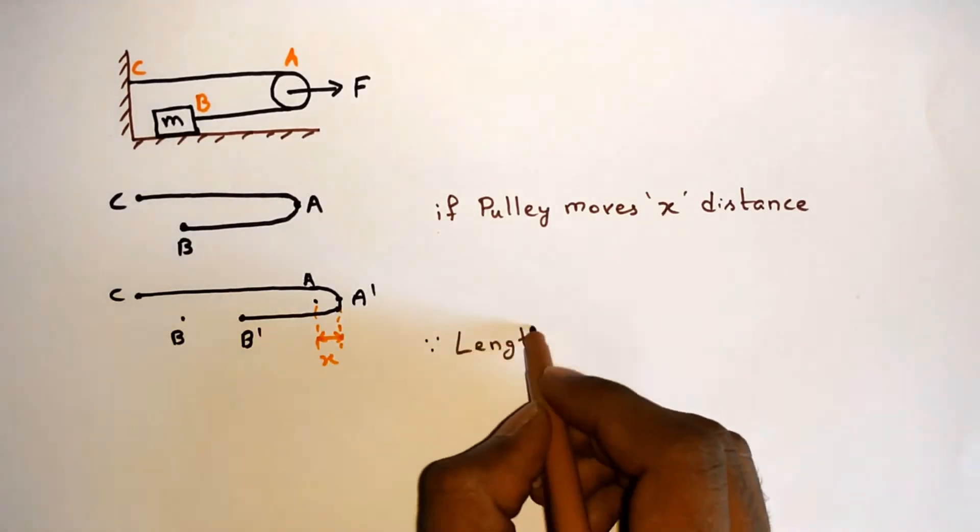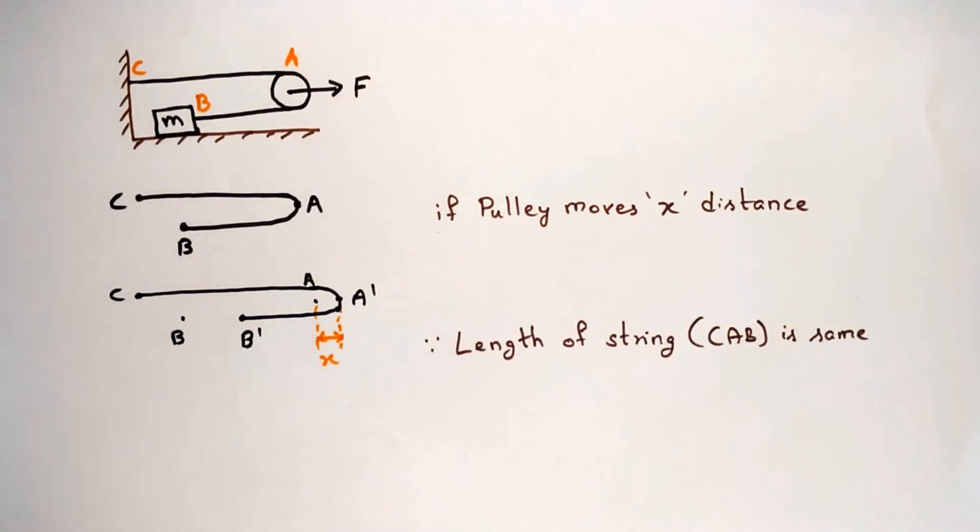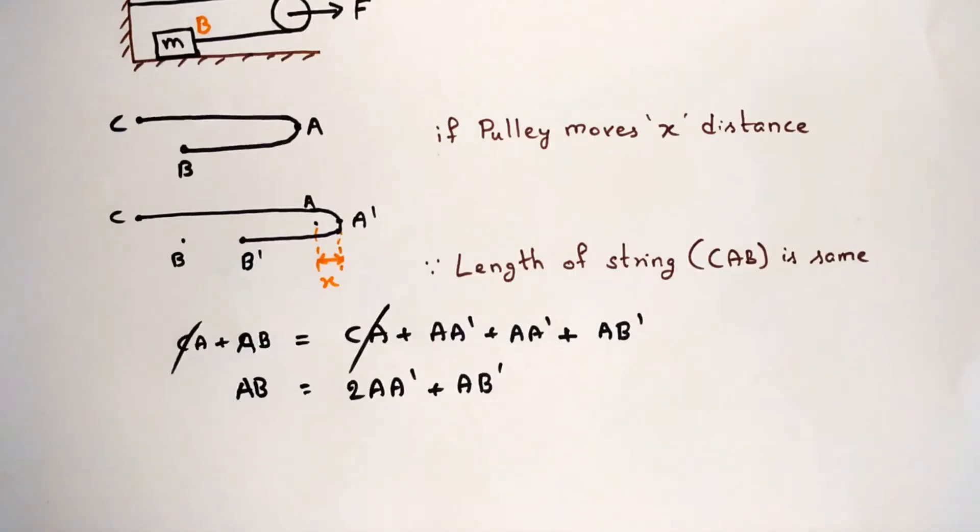Since we know the string length is constant, we can write CA + AB = CA' + A'B', which can be written as AB = 2AA' + AB'. Solving further, we get BB' = 2AA' = 2x.